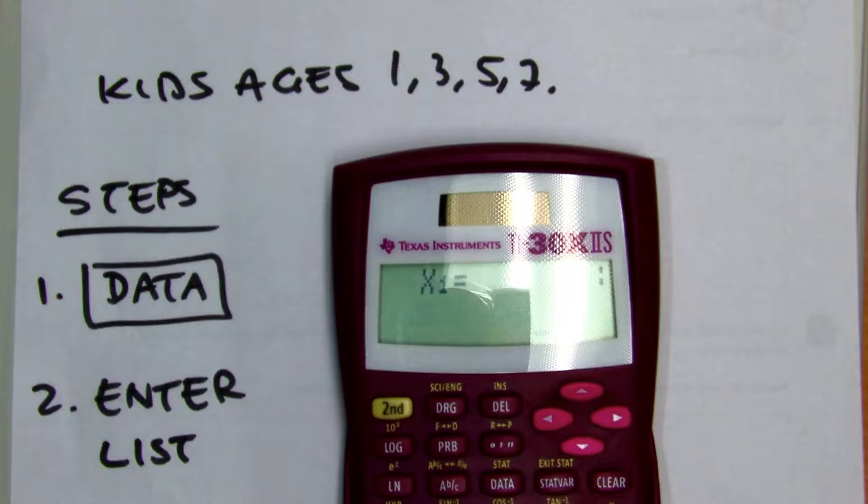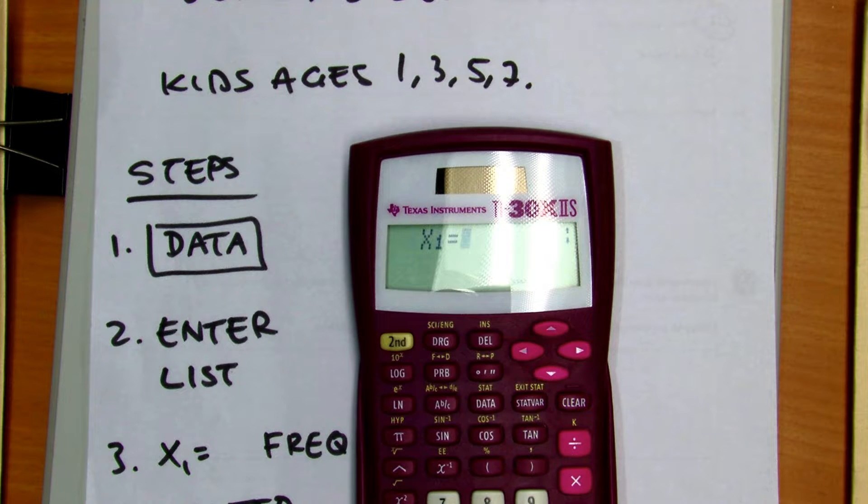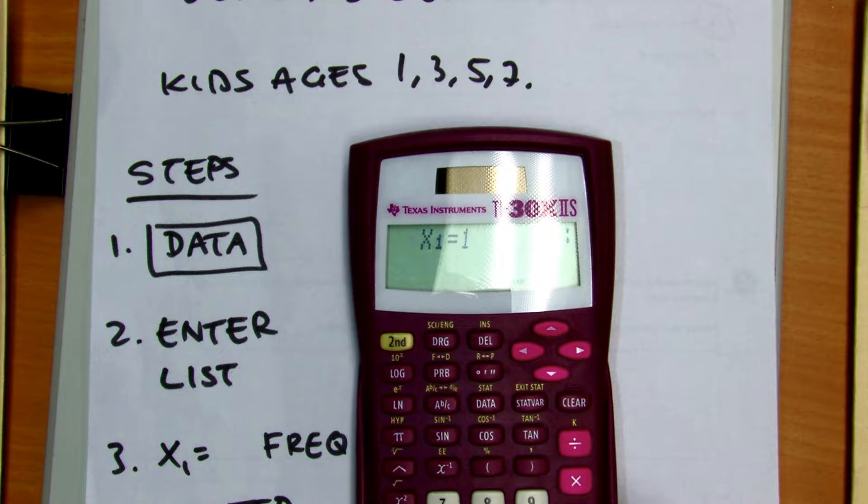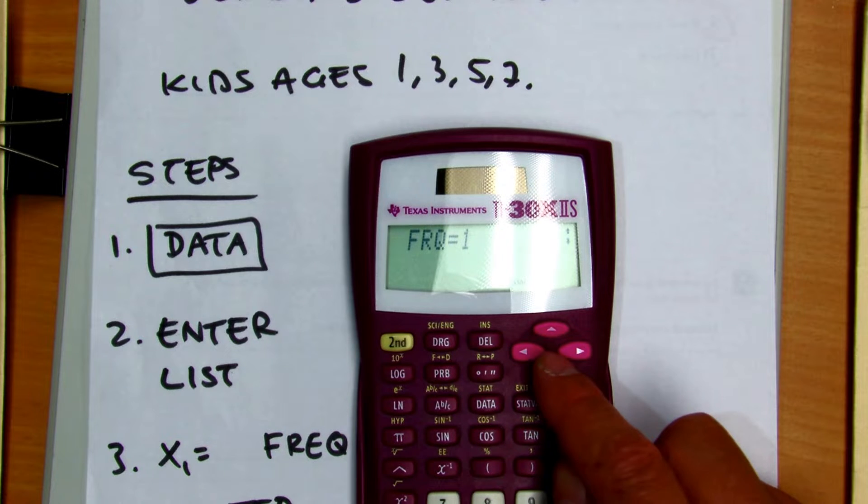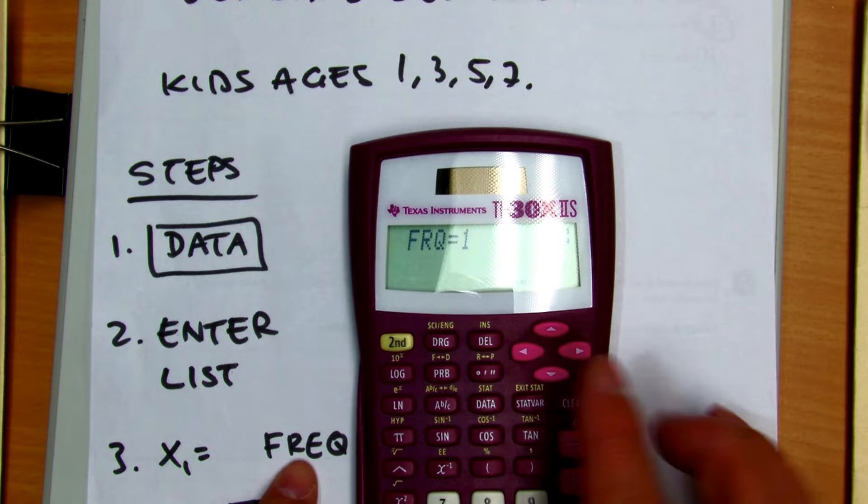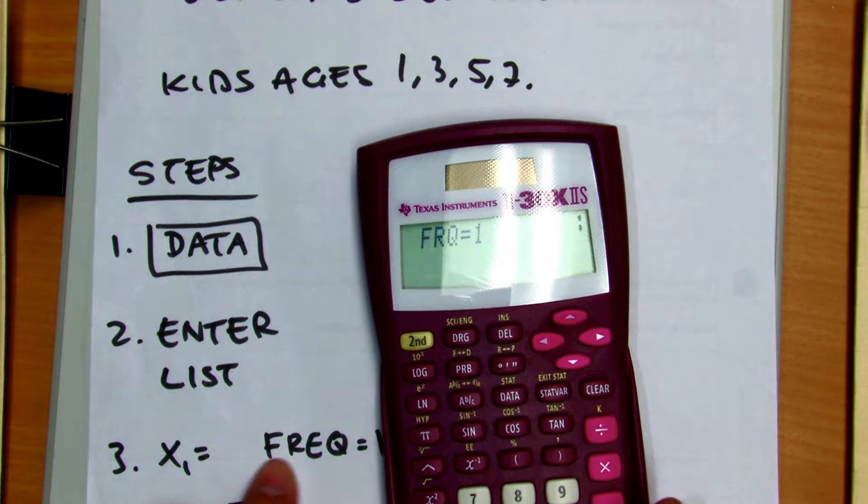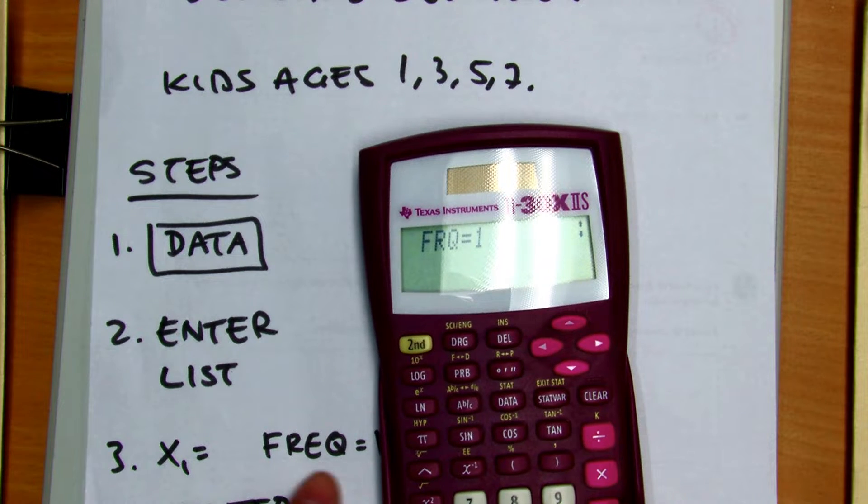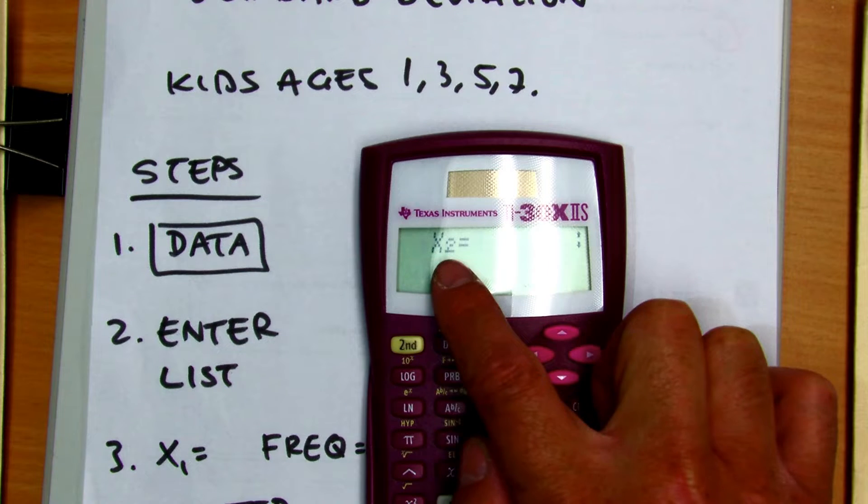So I'm going to press one. Enter with a firm click. And then the FRQ just means frequency. It just means you just want it to be one. So just press down,